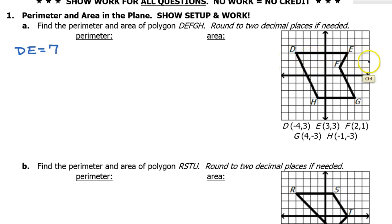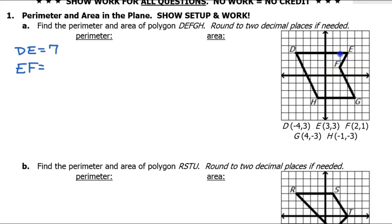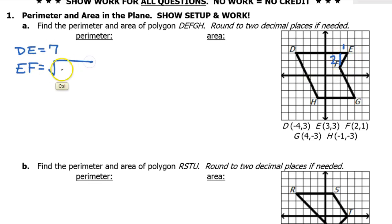Now moving on to EF. I have to make a tiny right triangle out of this. The horizontal is 1 and the vertical is 2. So using the Pythagorean theorem, the hypotenuse EF will be the square root of 1 squared plus 2 squared — that's 4 and 1, so that is the square root of 5.